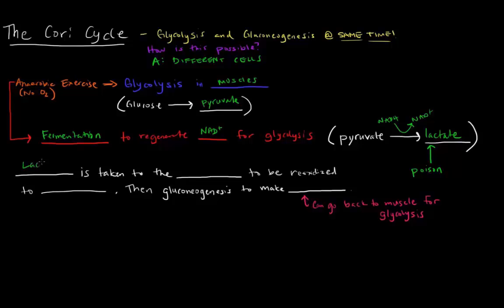So this lactate is taken to the liver to be re-oxidized to pyruvate. And then once we have these pyruvates, gluconeogenesis occurs to make glucose in the liver.